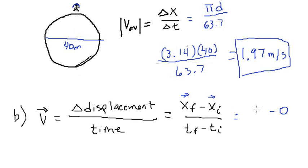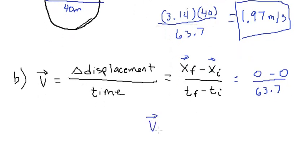In displacement, the initial distance was zero, and the final displacement is zero as well. Because if she went around the circle and finished where she started, there is no displacement. The time is 63.7 seconds. So this is zero divided by 63.7 seconds. The average velocity is equal to zero meters per second.